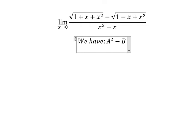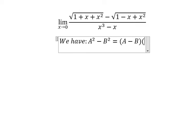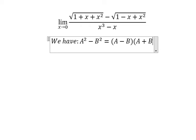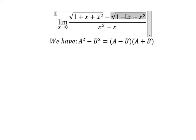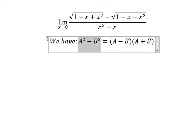A squared minus B squared equals to A minus B multiplied with A plus B. This is about A. This is about B. So we need to multiply with A plus B on numerator and denominator. So we can get A squared minus B squared.